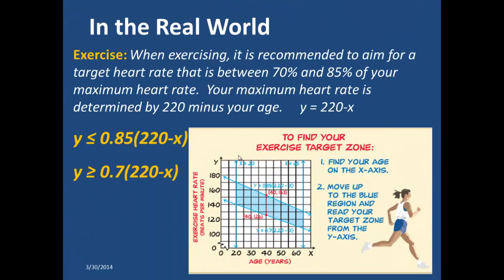We encounter inequalities in the real world all the time. For example, when exercising, it is recommended to aim for a target heart rate that is between 70% and 85% of our maximum heart rate. You can find your maximum heart rate by taking 220 minus your age.